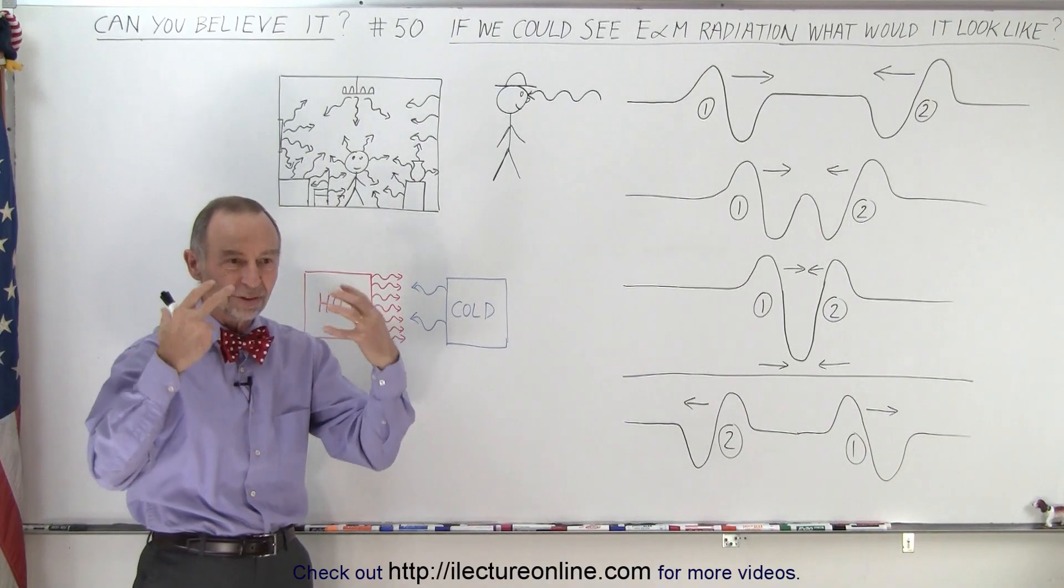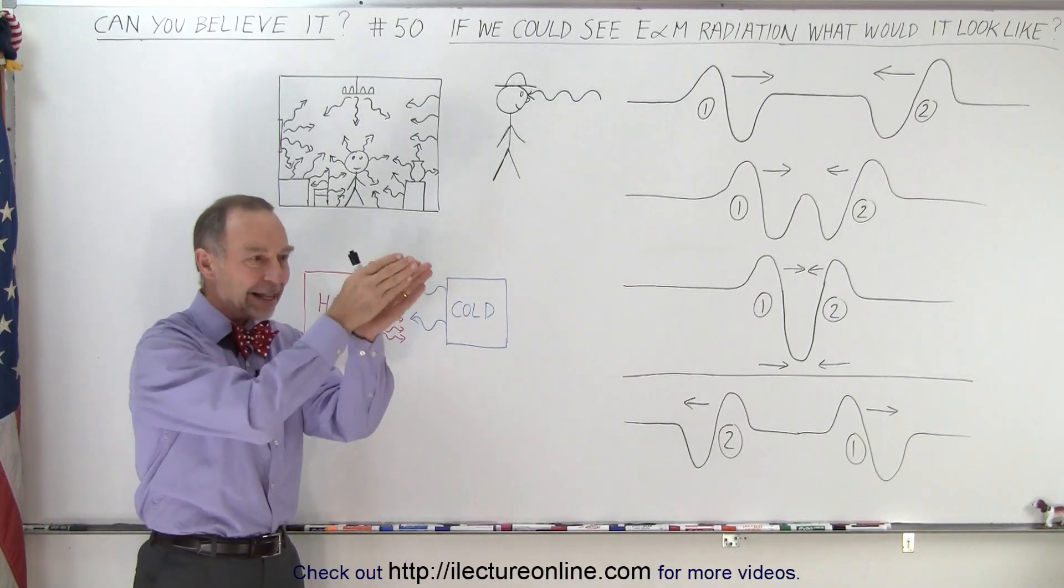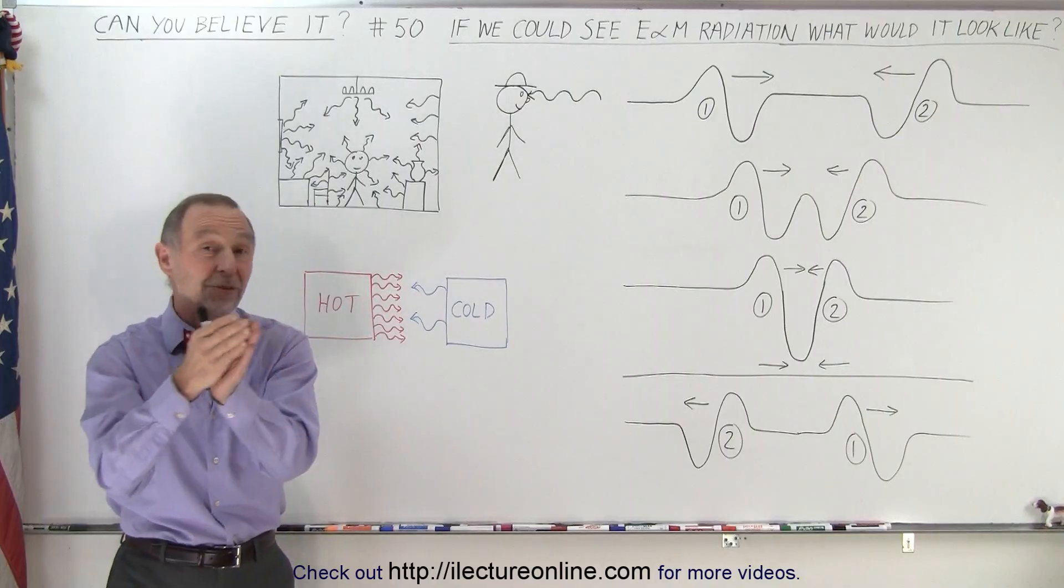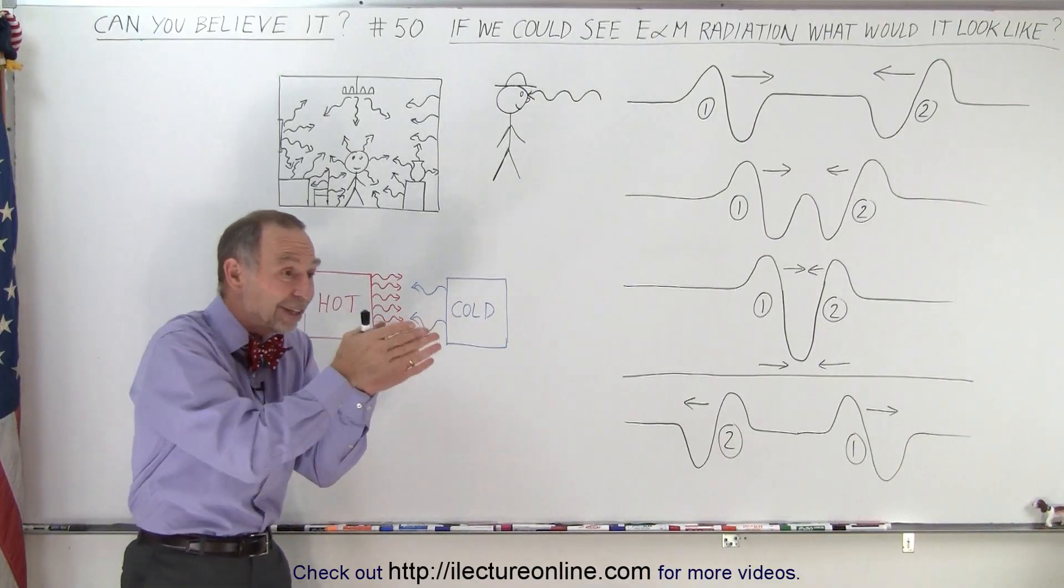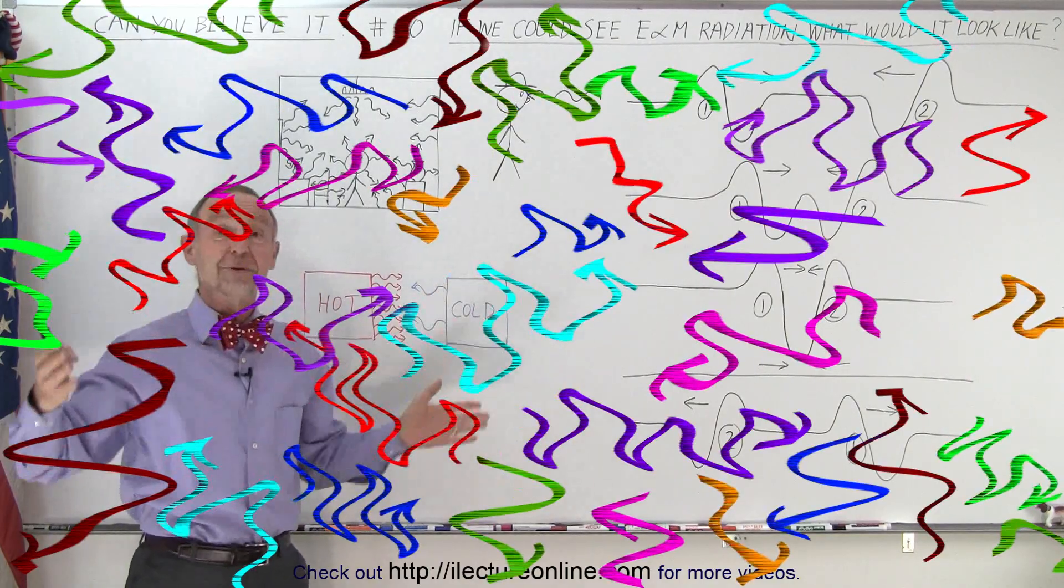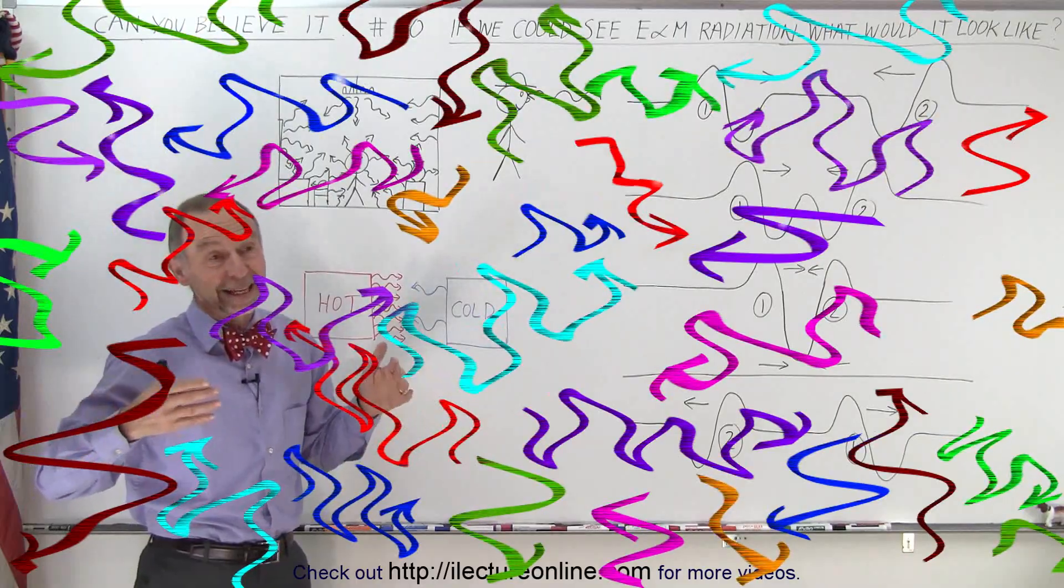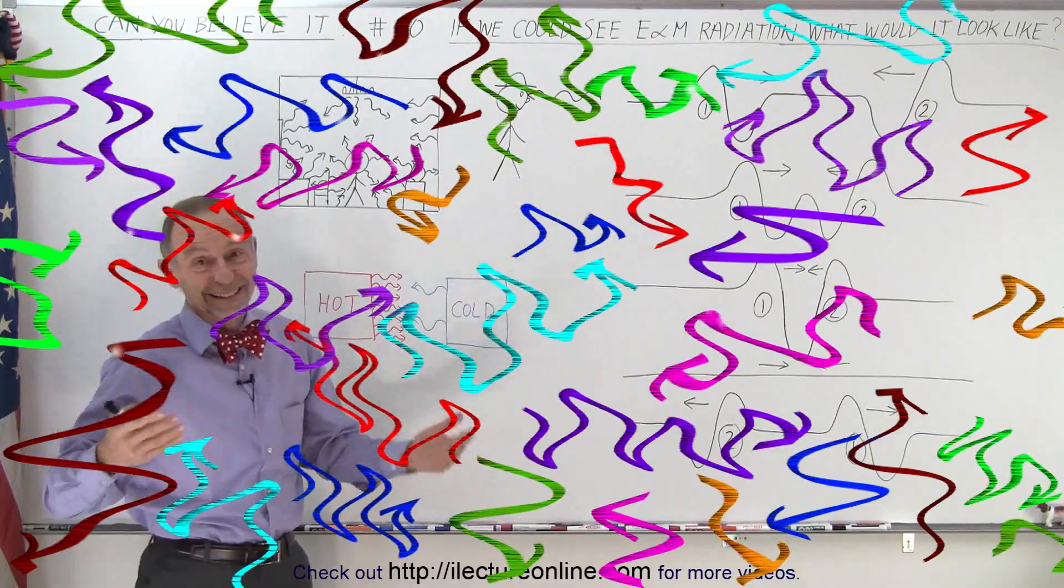If our eyes and our brain was set up to identify different portions of the infrared spectrum, perhaps we would see different colors of infrared, colors that we've never seen before.